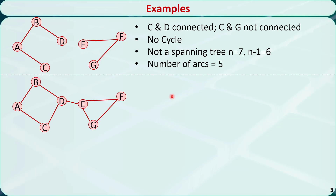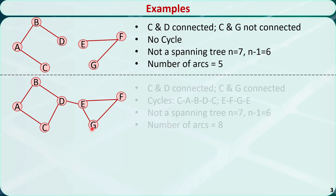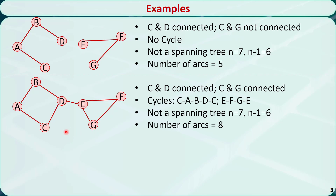In the second example, node C and node D are connected, and node C and node G are also connected. There are cycles — for example, if we start from node C, we can come back to node C by following the path C, A, B, D, C. This is not a spanning tree because the number of nodes n equals 7, so n-1 equals 6, but the number of arcs is 8, which is not equal to n-1.